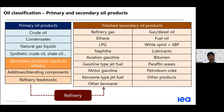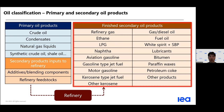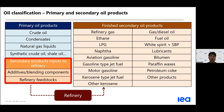The linkage between primary and secondary products is through the refinery process. Not only do the inputs to the refinery contain crude oil and condensates, but also secondary product inputs such as additive blending components or refinery feedstocks.